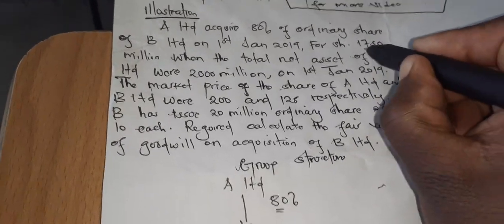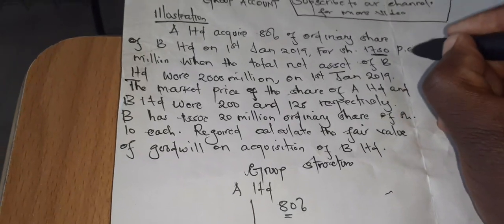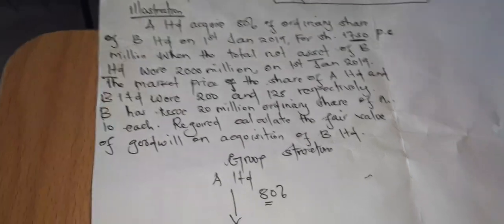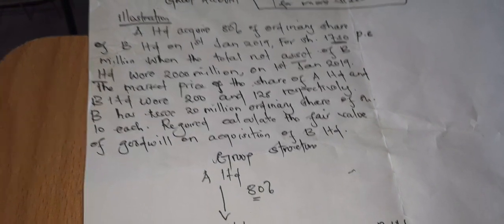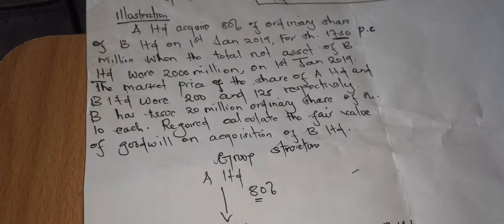So we have to take the purchase consideration of A Limited. It reads, A Limited acquire 80% of the ordinary share of B Limited on 1st January 2019 for shilling 1750 million. So this is our purchase consideration. This is our purchase consideration.